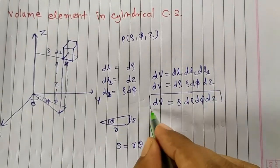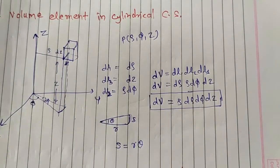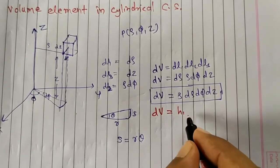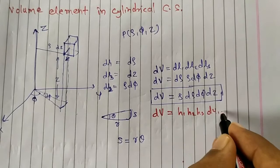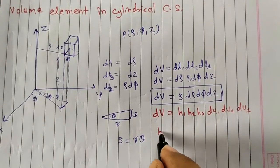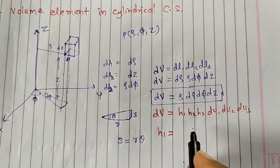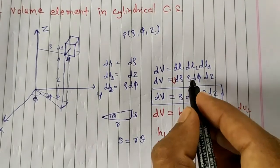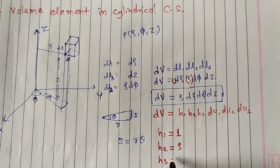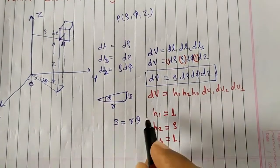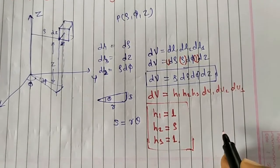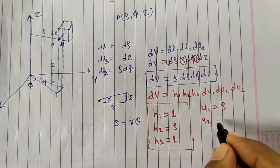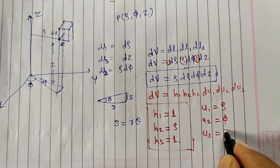Comparing with the general expression dv = h1·h2·h3·du1·du2·du3, we can identify the scale factors. Here h1 = 1, h2 = ρ, and h3 = 1. The coordinates are u1 = ρ, u2 = φ, and u3 = z. These are the scale factors in the cylindrical coordinate system.